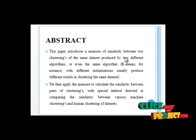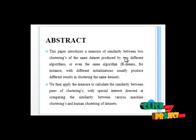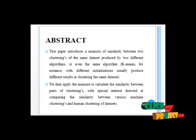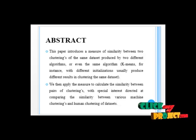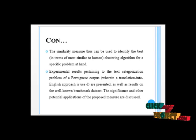In abstract, this paper introduces a measure of similarity between two clusterings of the same data set produced by two different algorithms, or even the same algorithm. K-means, for instance, with a different initialization usually produces different results in clustering the same data set. We then apply the measure to calculate the similarity between pairs of clusterings, with special interest directed on comparing the similarity between various machine clusterings and human clusterings of a data set. The similarity measure can thus be useful to identify the best algorithm — in terms of most similar to human clustering — for a specific problem at hand.